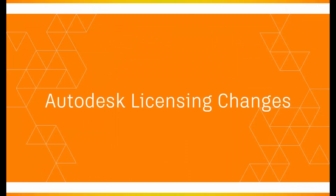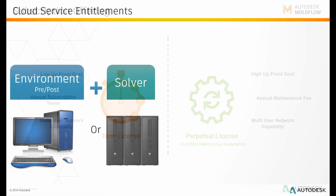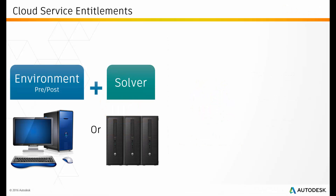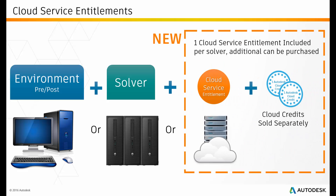First of all, licensing changes. Existing customers have always been able to buy perpetual licenses with subscription. If you have a perpetual license on subscription, you can keep paying the subscription going forward and get access to the new and latest version of the software. Any new license you buy will be an annual license at a lower cost. In addition to running analysis on a local machine or local network, you will also be able to run analysis in the cloud. Molflow Insight customers with one Insight license will also get access to one Insight cloud entitlement, giving you the right to run an analysis in the cloud. The only thing you need to do is buy some extra cloud credits to run analysis in the cloud.